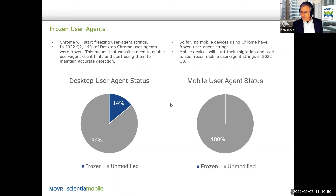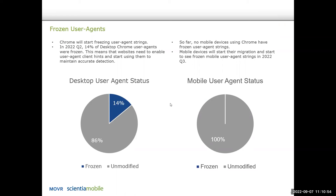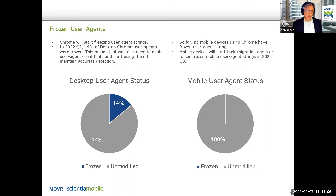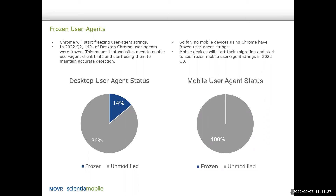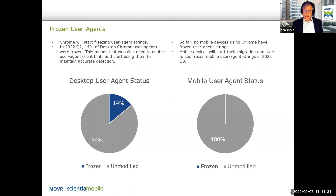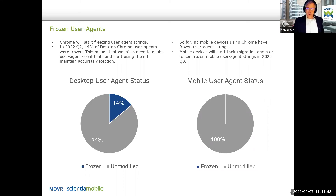It is a negligible amount on the mobile user agent side, but it's going to happen, so you should prepare for it. If you're watching this, you really should prepare yourself. Look at our blogs — there are three or four things you need to do. If you have a website and you want accurate device detection, or you're in the advertising industry keeping track of device detection, you need to set up your servers to request these client hints. Once you've set them up and feed them into WURFL, it will reconcile the frozen user agent strings with the client hints and provide an accurate answer around device detection.